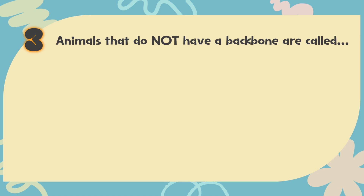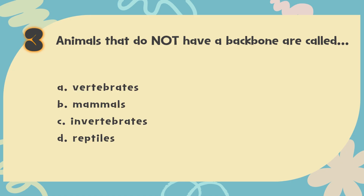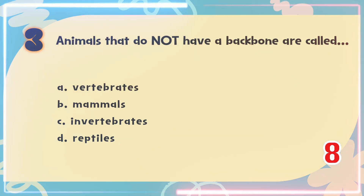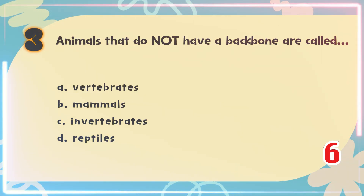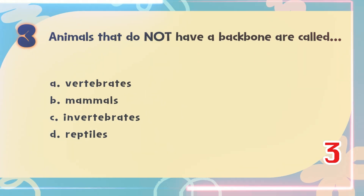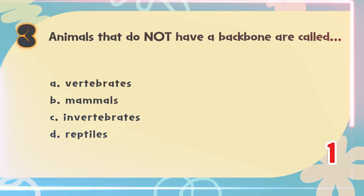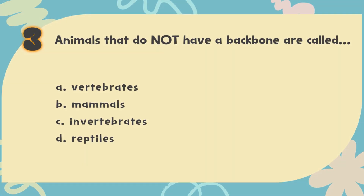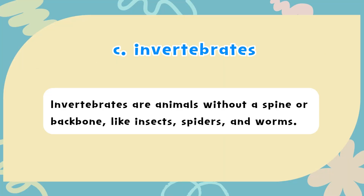Number 3: Animals that do not have a backbone are called — A. Vertebrates, B. Mammals, C. Invertebrates, D. Reptiles. The correct answer is C. Invertebrates. Invertebrates are animals without a spine or backbone, like insects, spiders, and worms.